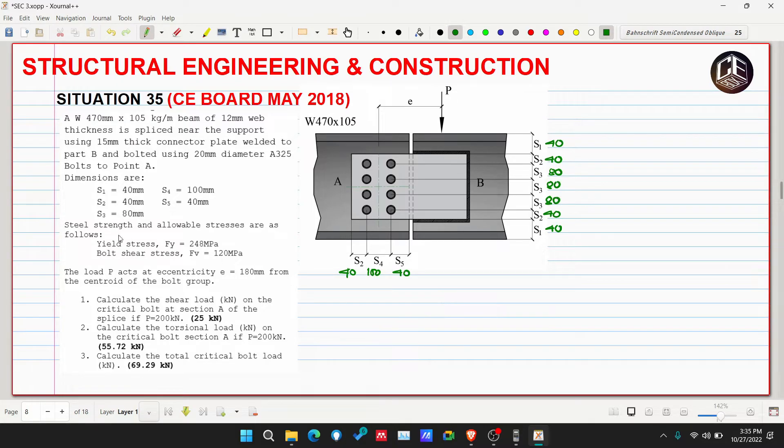Steel strength and allowable stresses are as follows: Fy is equivalent to 248 megapascals, bolt shear stress Fb is equivalent to 120 megapascals. The load P acts with an eccentricity e of 180 millimeters from the centroid of the bolt group.